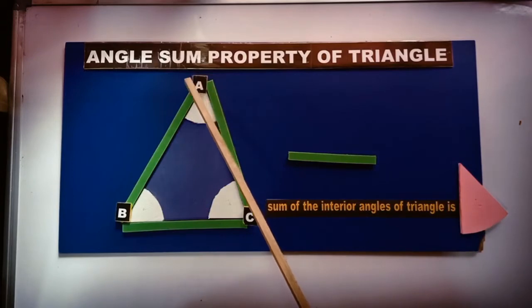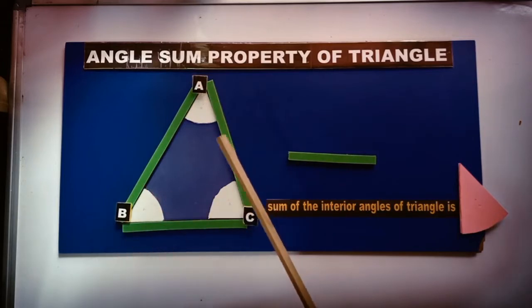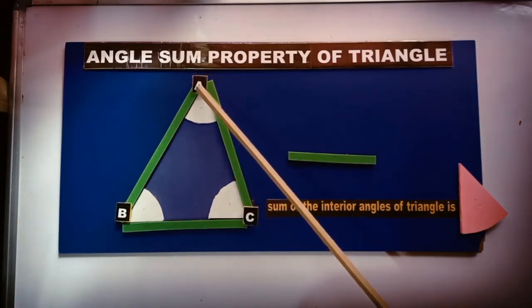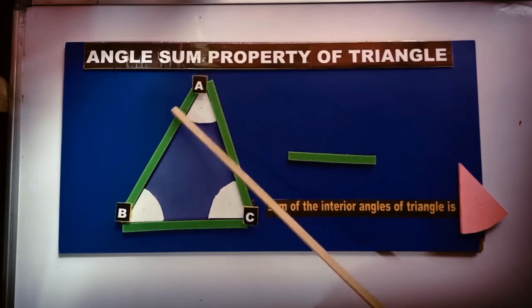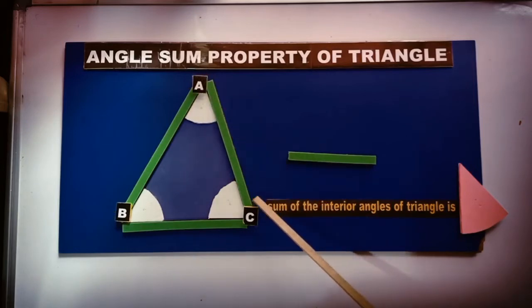Now see here this is a triangle ABC. In triangle ABC we have three sides that is AB, BC and AC are the three sides.